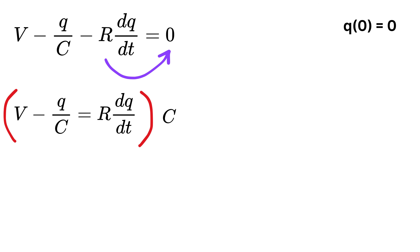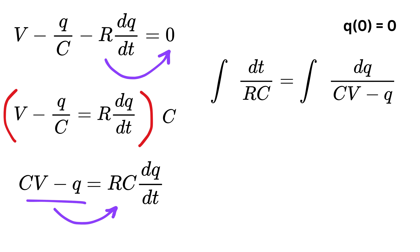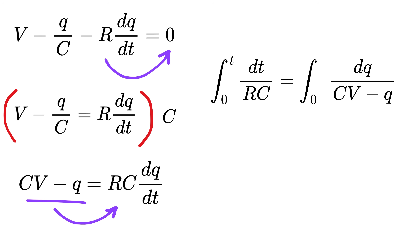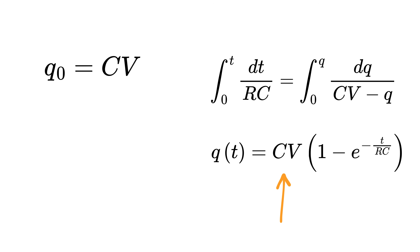Taking terms to the right side and multiplying by C gives CV minus Q equals RC times DQ over DT. Rearranging and integrating both sides — with limits at T equals zero where Q is zero, up to general time T with charge Q — we get Q equals CV times one minus E raised to minus T over RC. We can replace CV by Q0, which is the maximum possible charge on the capacitor. The product R multiplied by C is known as the time constant, denoted by the Greek letter tau.